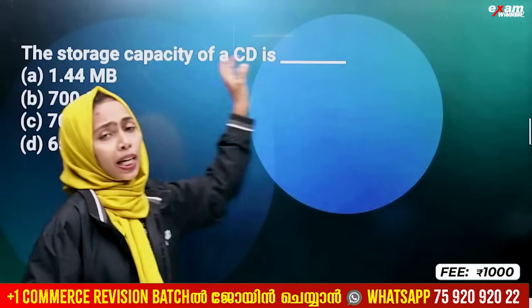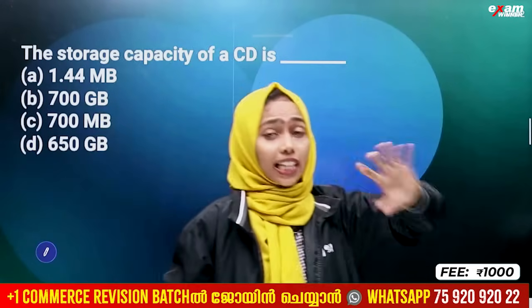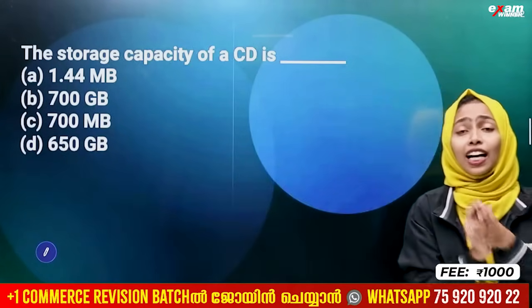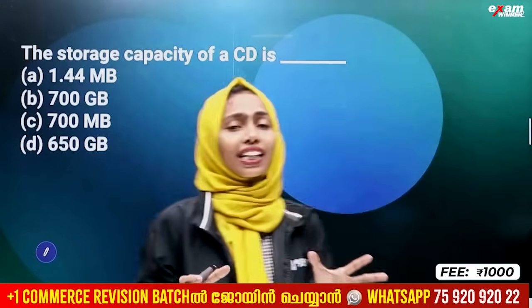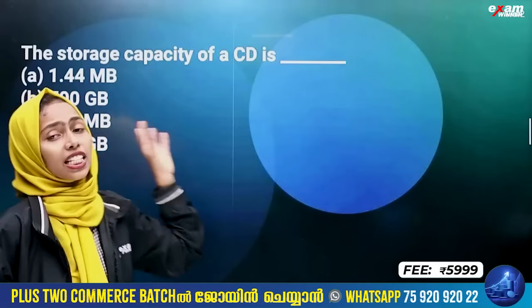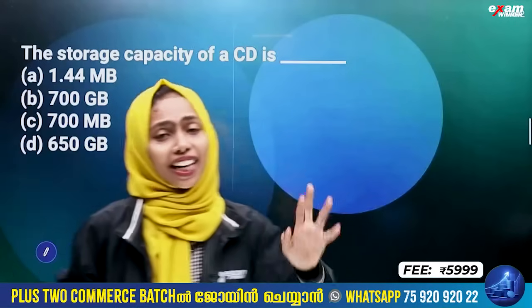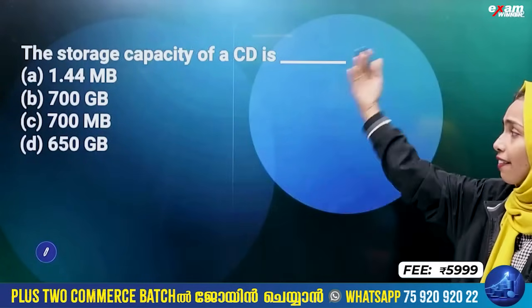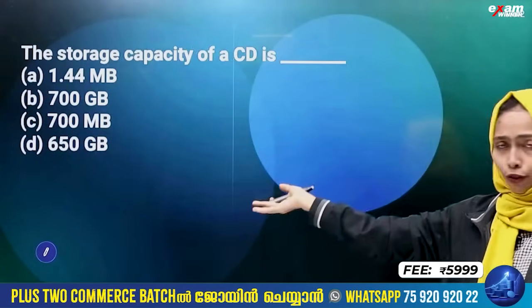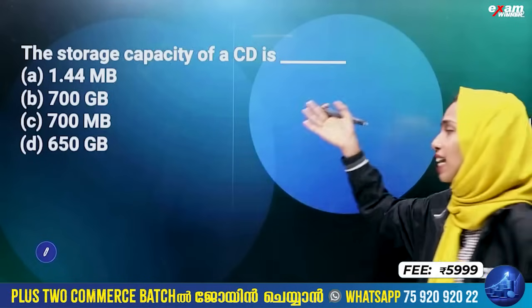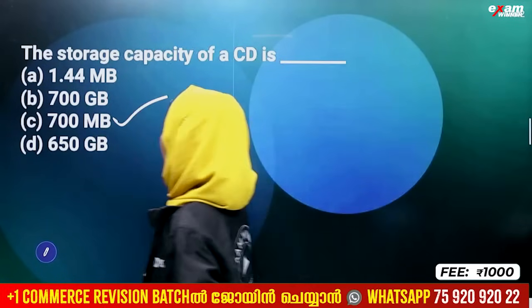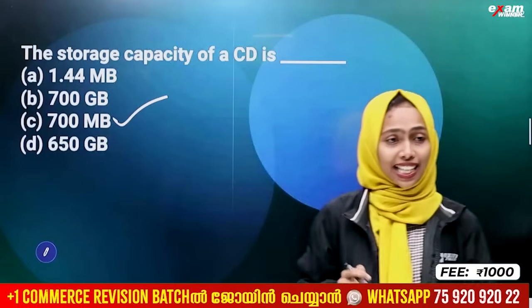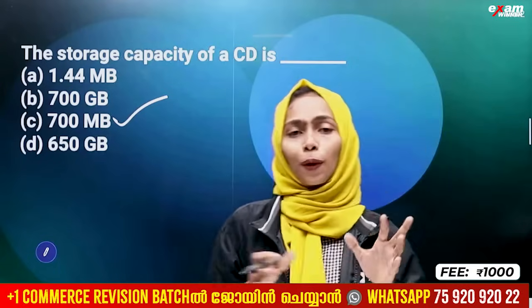The storage capacity of a CD: CD full name is Compact Disk. The storage capacity of a floppy disk is 1.44 MB. The storage capacity of a CD is 700 MB.